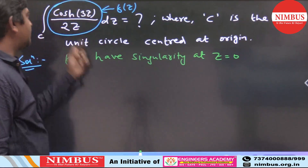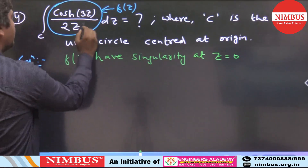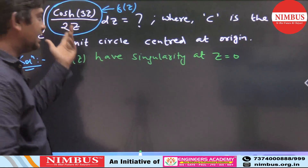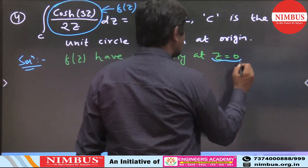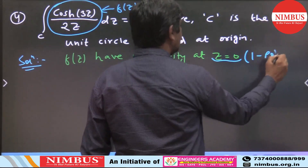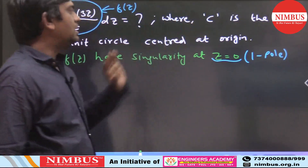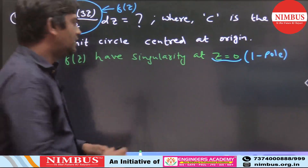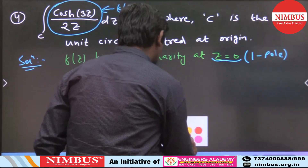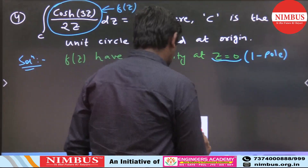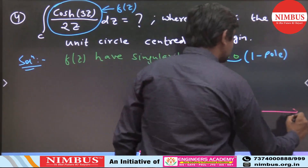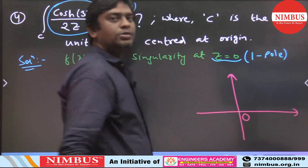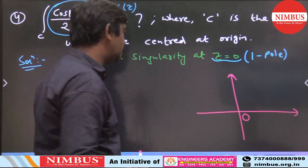At z = 0 it is a pole. Since we write z (not z squared or z cubed), it is a pole of order 1 — a simple pole. The contour is the unit circle centered at the origin. Drawing the diagram: real axis, imaginary axis, origin, and the unit circle as the contour. The singularity z = 0 lies inside the contour.